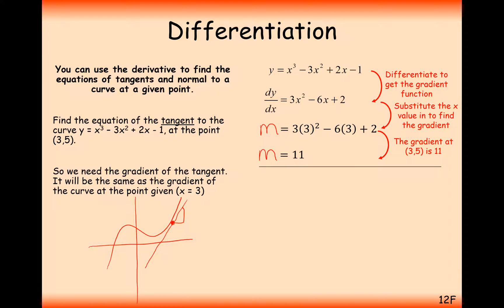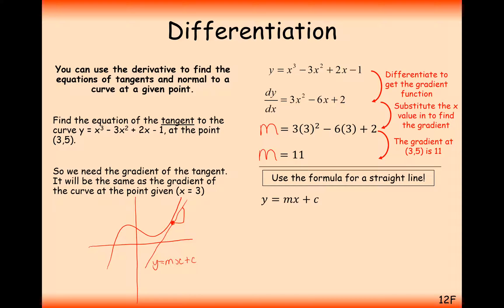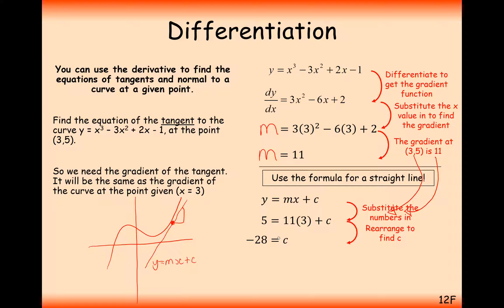Now we know the equation of this line — y equals mx plus c as a straight line — is going to be y equals 11x plus something. We plug in the coordinate and the gradient into the equation of a straight line to work out c. Substituting in the values: 5 equals 11 times 3 plus c. Rearranging gives c equals minus 28, so y equals 11x minus 28. The gradient is 11 and the y-axis intersection is minus 28.